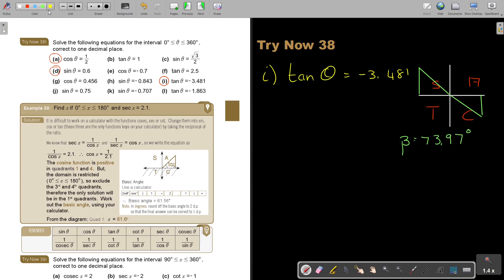To get θ, it's 180 - 73.97, and that answer will be 106.0 degrees. One decimal place, so you must write that zero. The other one is 360 - 73.97, and that will be 286.0 degrees. There are your two answers. That's how you do it.